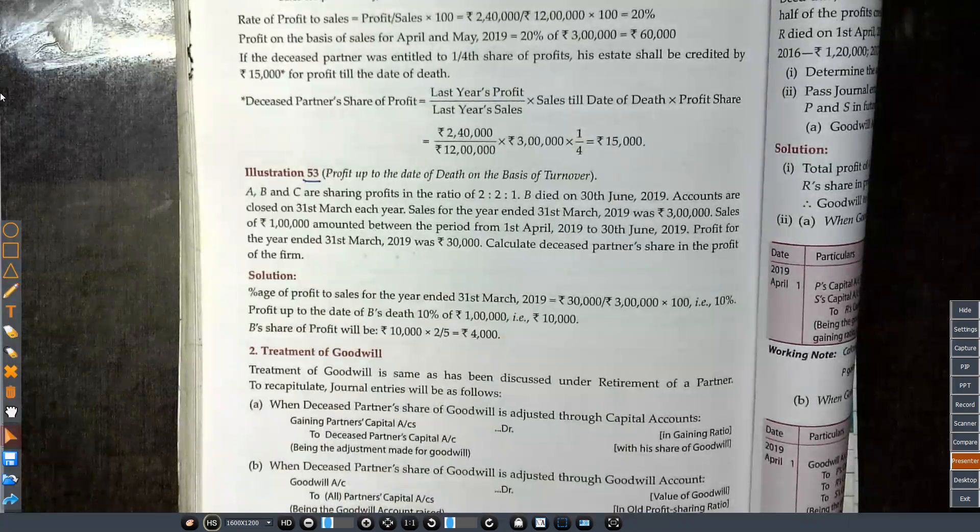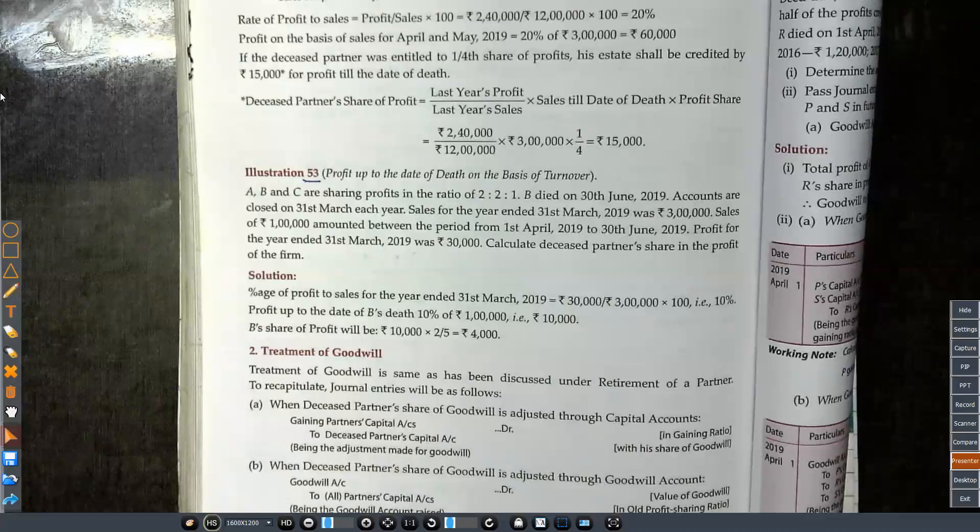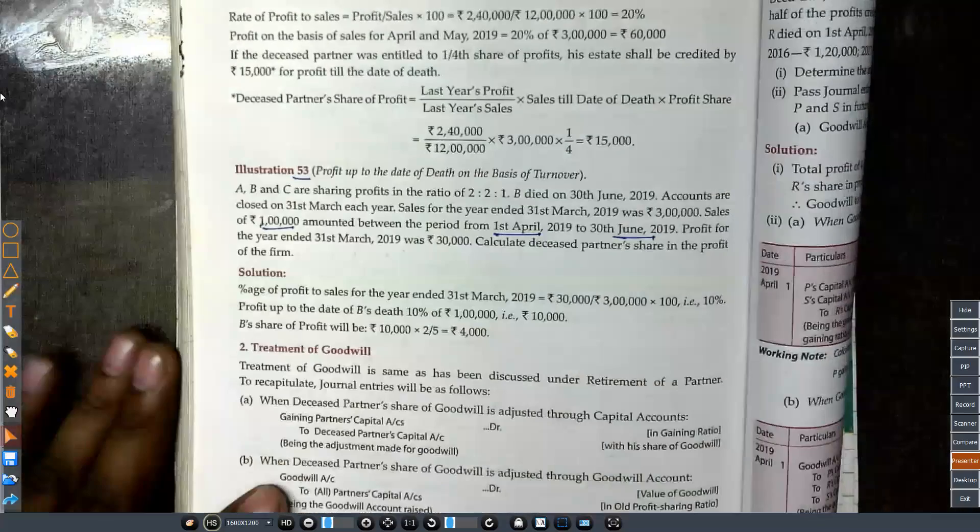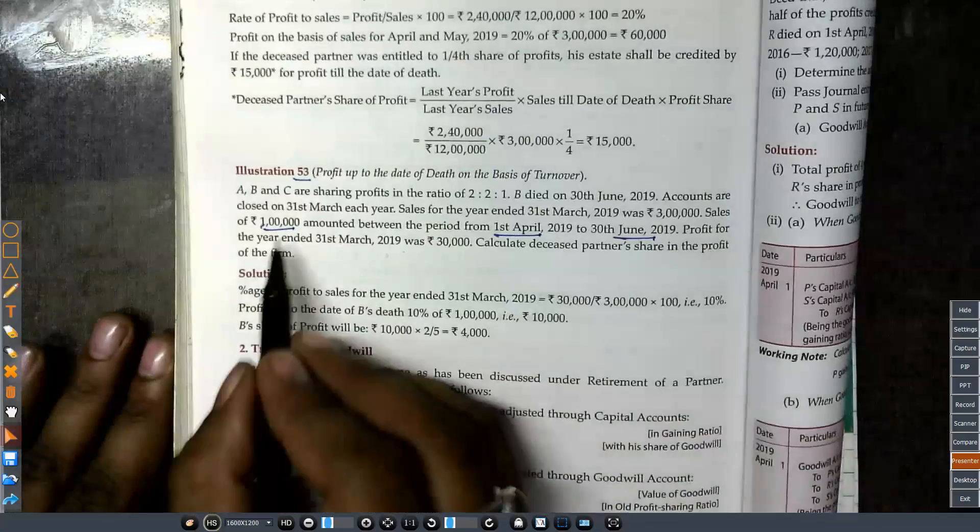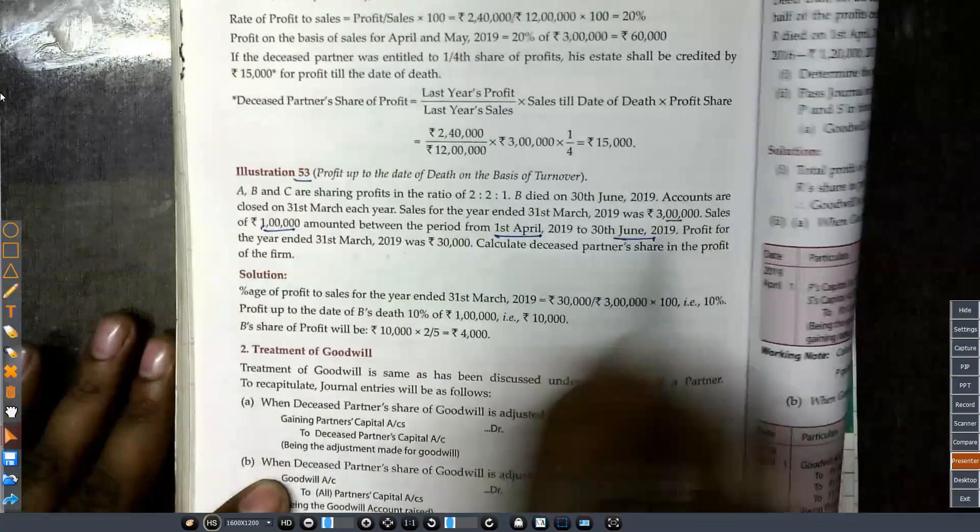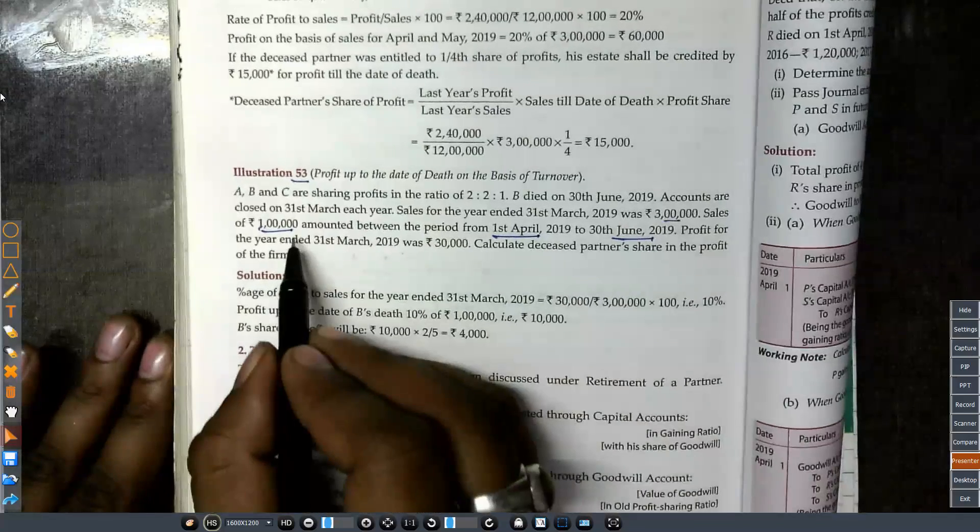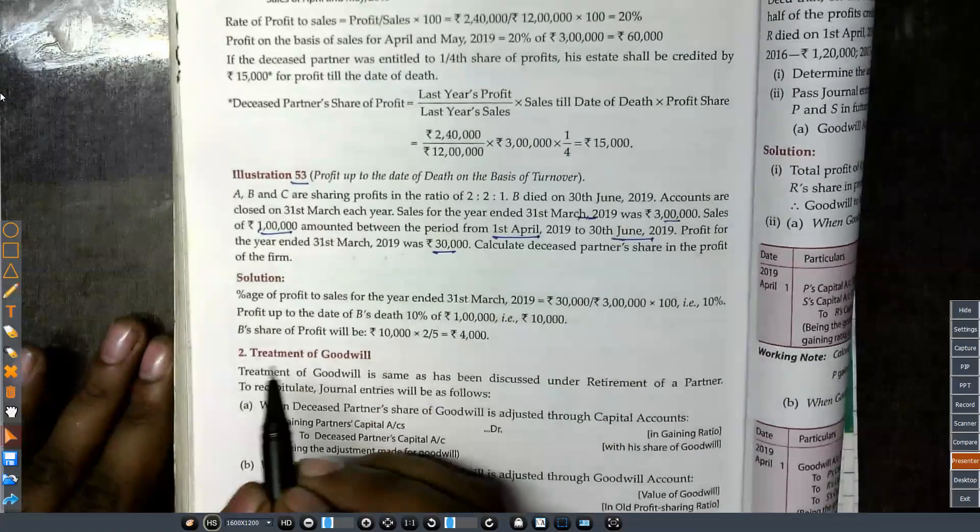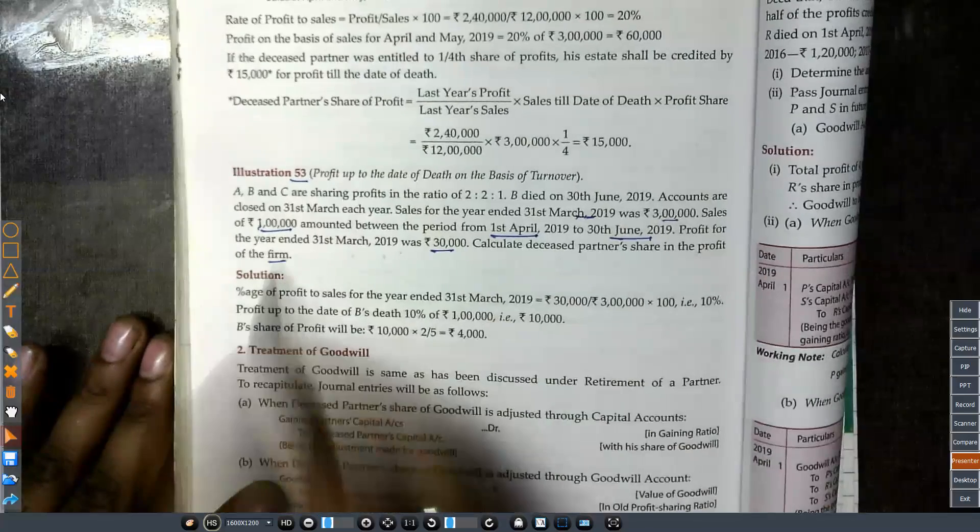I mean 31st March 2019. After the previous year, sales were 3,00,000 and profit was 30,000. The sales of 1,00,000 occurred in the three-month period from April 2019. The person died in June 2019. The profit for the year ending 31st March 2019 was given. Calculate the deceased partner's share of profit.